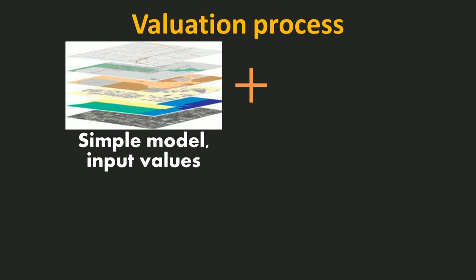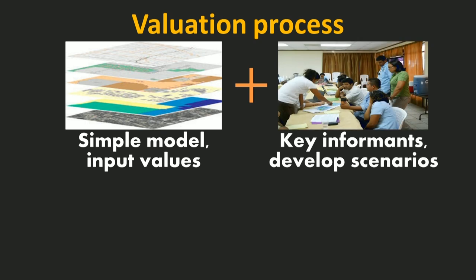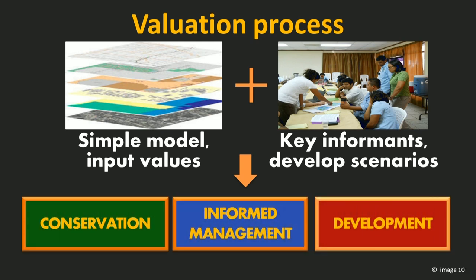You also need to think about what the scenarios for future development might be. Typically you would gather key informants — people who really know what's going on in that country — and they sit down and ask how might the future unfold. Decision makers always need options to pick from, and the question is: what are the consequences of each of those options? And so they might come up with a variety of different scenarios.